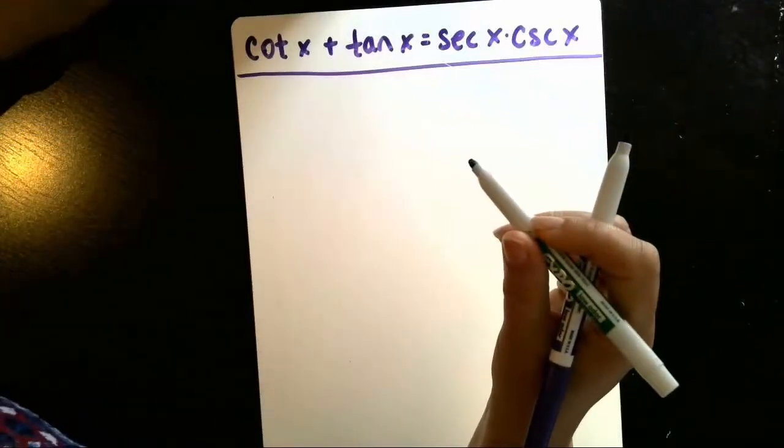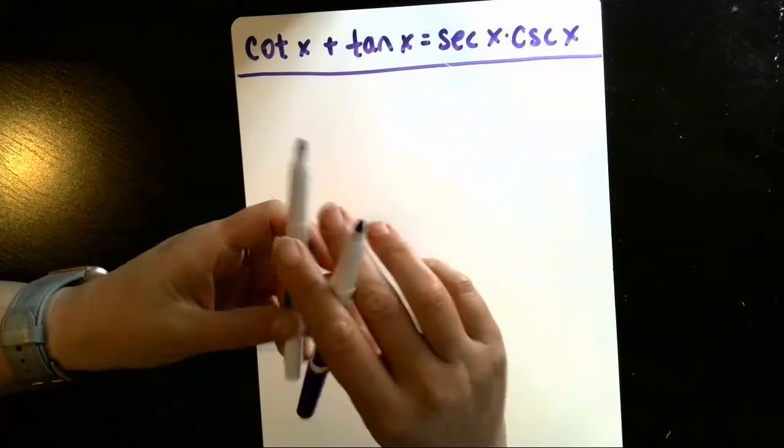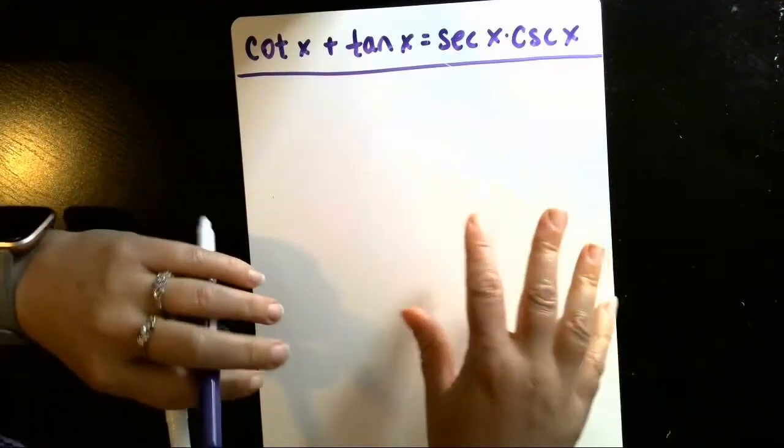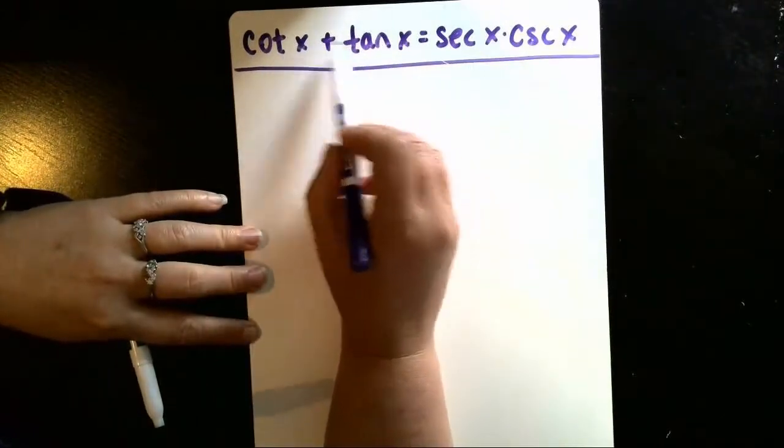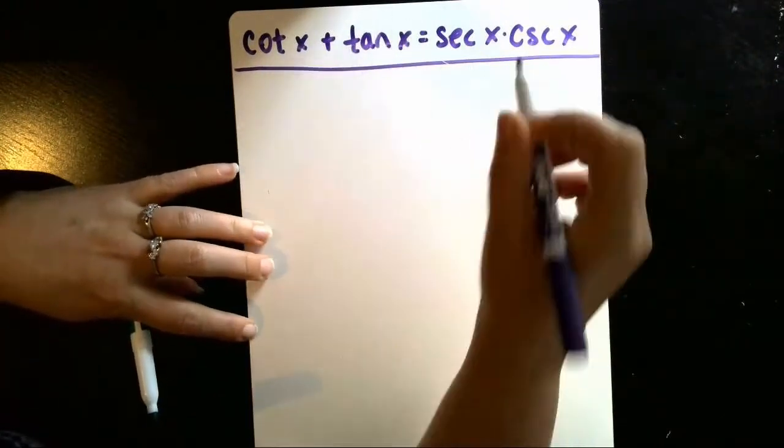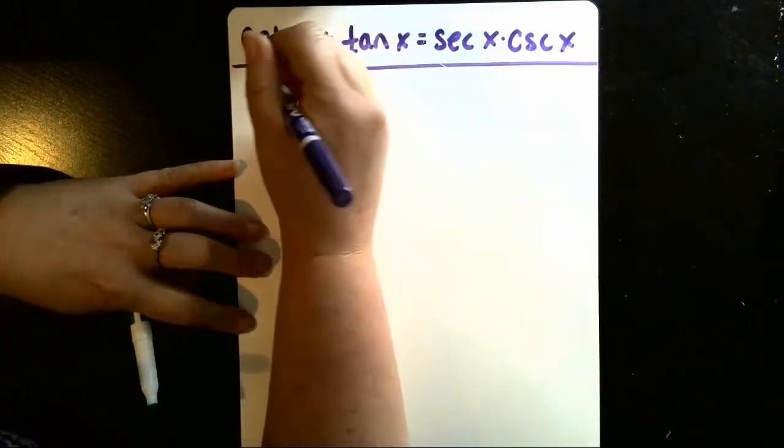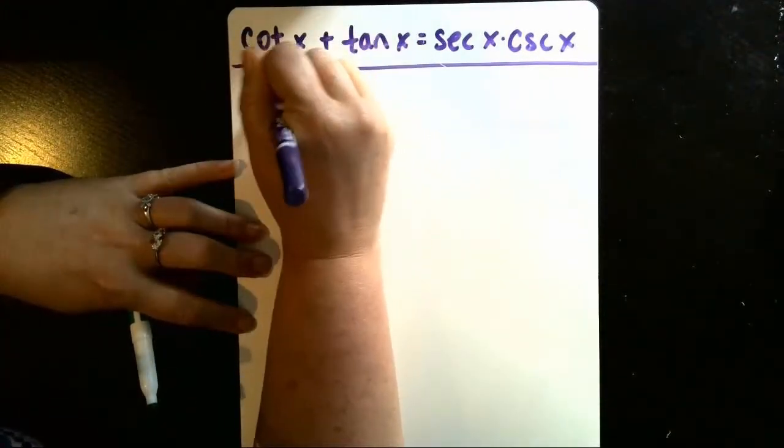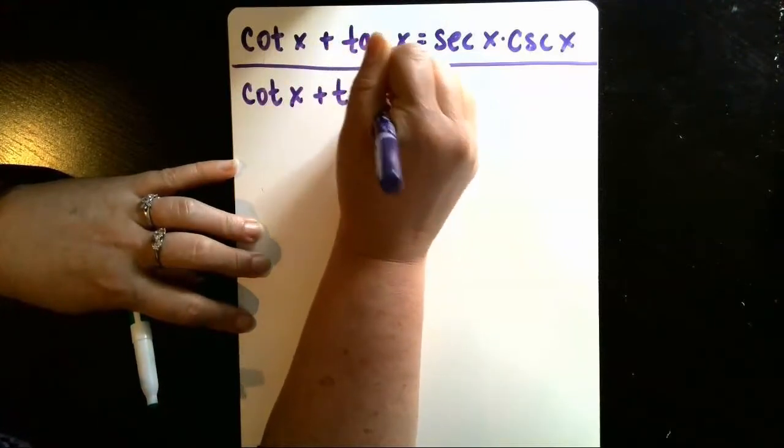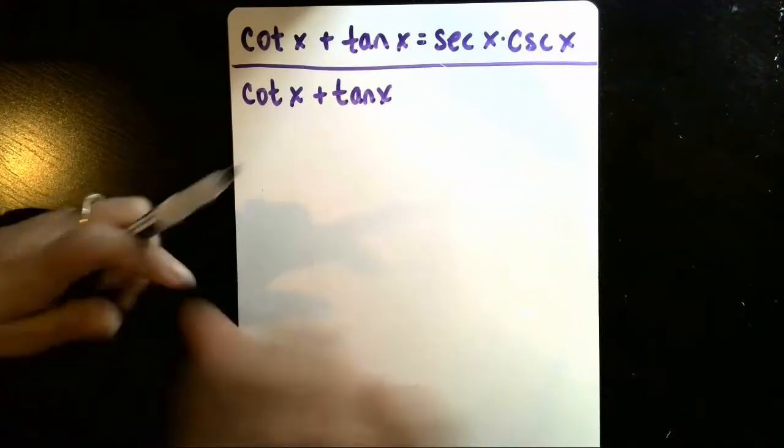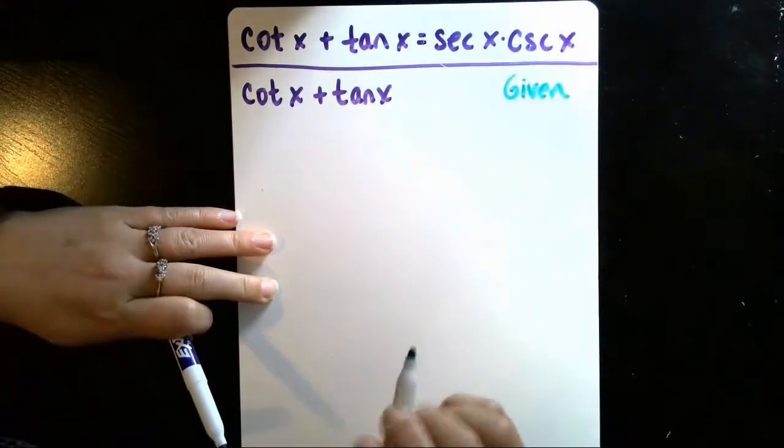I want to verify this trig identity, and to do that I'm going to start with the more complicated side. To me, the addition of two terms is more complicated than the product of secant and cosecant. So I'll start with the left: cotangent of x plus tangent of x. My reason for that step is that it's given.